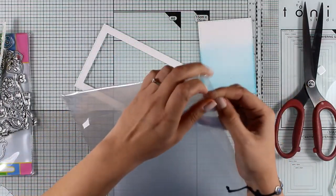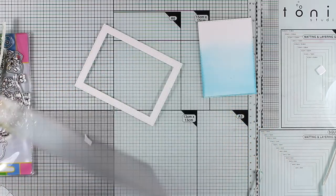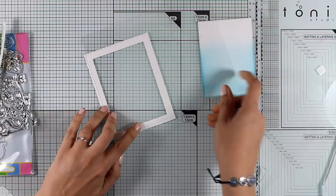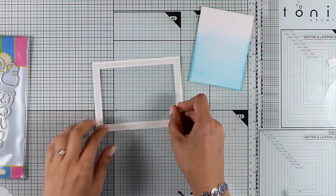I used two rectangle dies, one inside the other, to cut out this white frame. Now I'm sticking on top of that my acetate. The acetate I'm using is by Tonic Studios—it's nice and sturdy, but of course you can reuse some acetate from packaging.